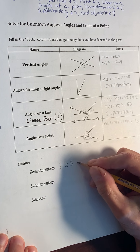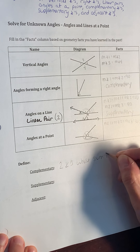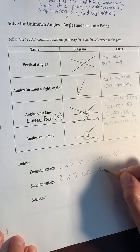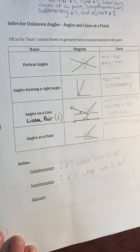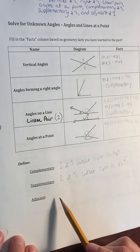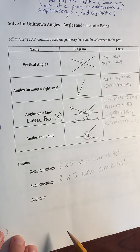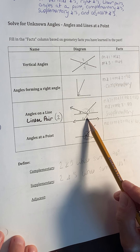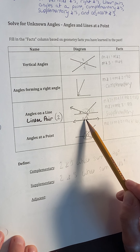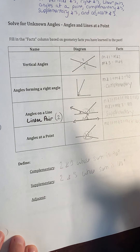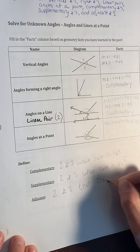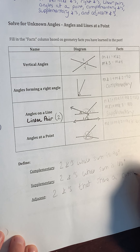From the above, let's define these terms. Complementary: two angles whose sum is 90 degrees. Supplementary: two angles whose sum is 180 degrees. Adjacent: angles that are right next to each other, sharing a common side and a common vertex. For example, angles one and two share a common vertex and a common side, so they are called adjacent angles.